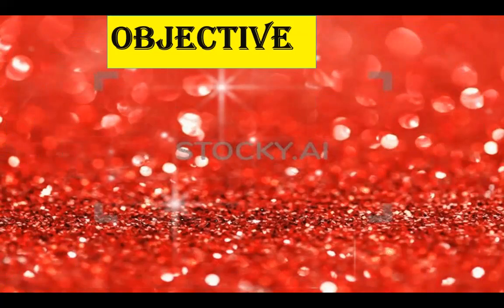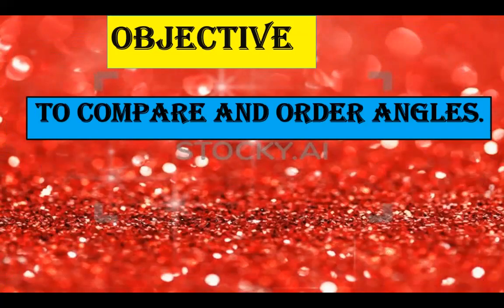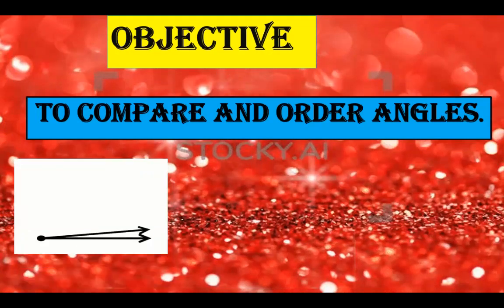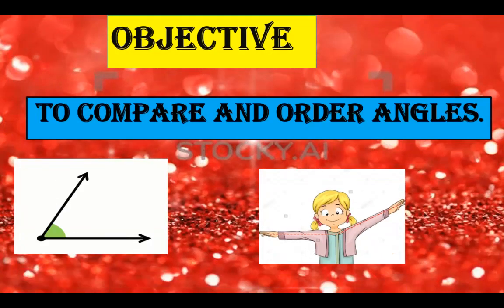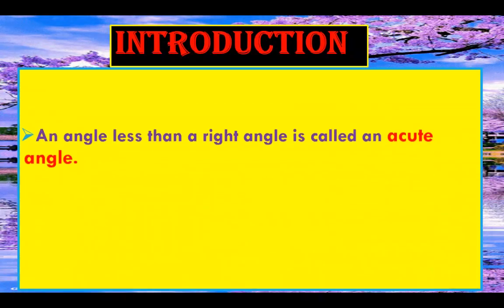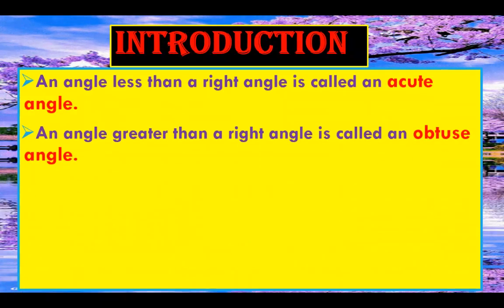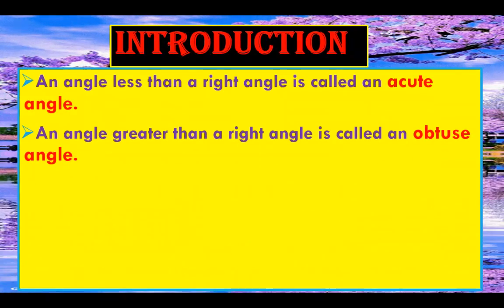Our lesson objective is to compare and order angles. An angle less than a right angle is called an acute angle. An angle greater than a right angle is called an obtuse angle.